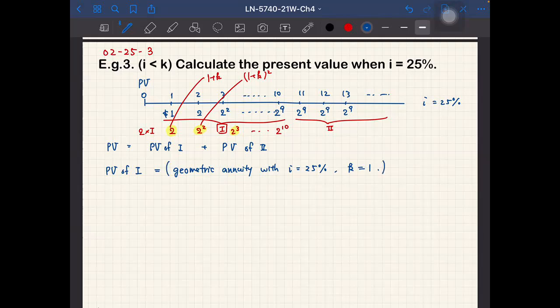And finally, if we multiply by 2, that becomes i is equal to 25% and K is equal to 1. So if we calculate, maybe I will say that the present value of 2 times i, 2 times i is equal to this. So maybe I will say 2 times present value of i.